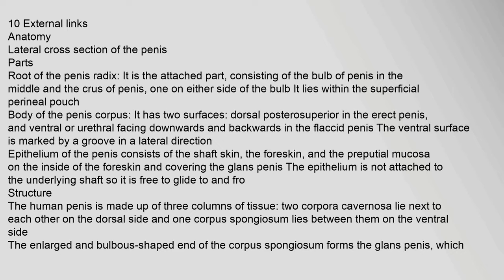The root of the penis (radix) is the attached part, consisting of the bulb of the penis in the middle and the crura of the penis, one on either side of the bulb. It lies within the superficial perineal pouch. The body of the penis (corpus) has two surfaces: dorsal (posterior/superior in the erect penis) and ventral or urethral, facing downwards and backwards in the flaccid penis.